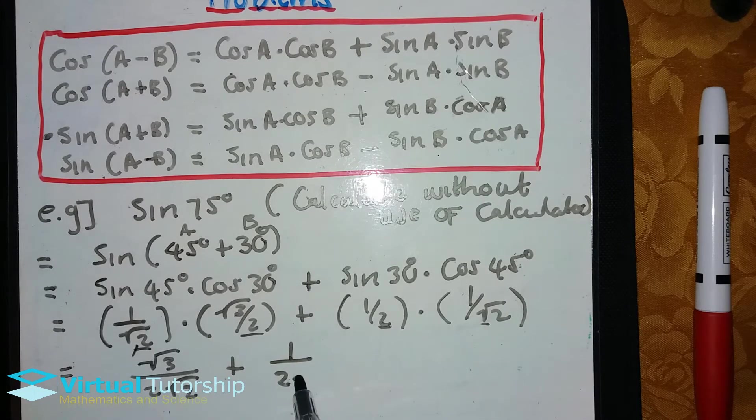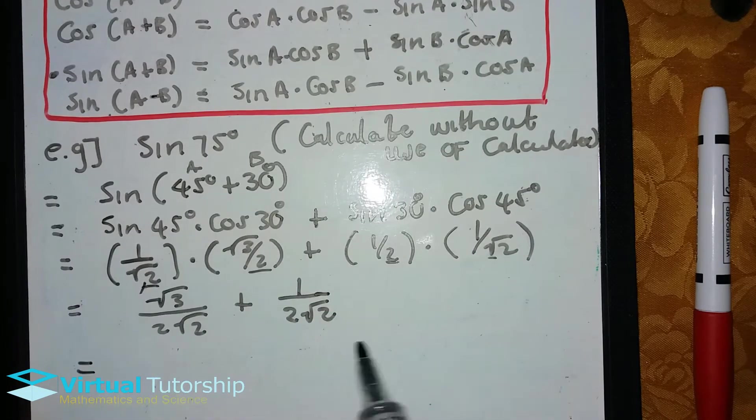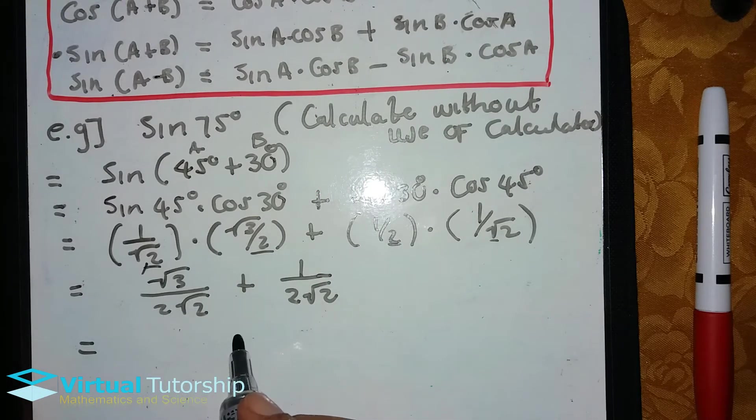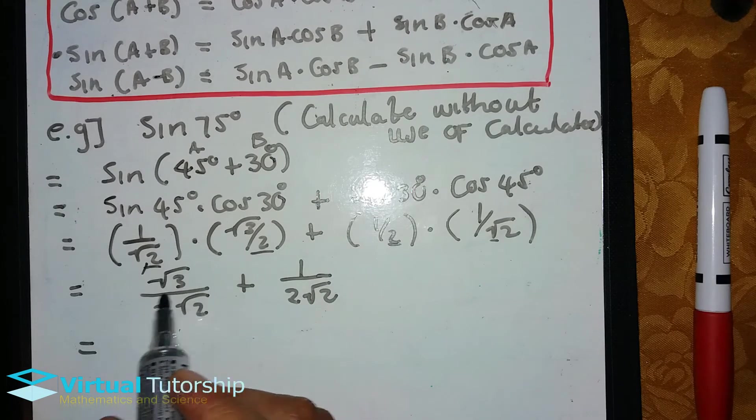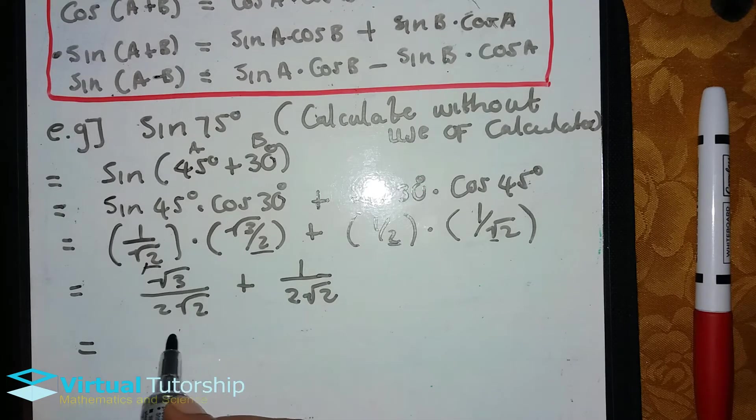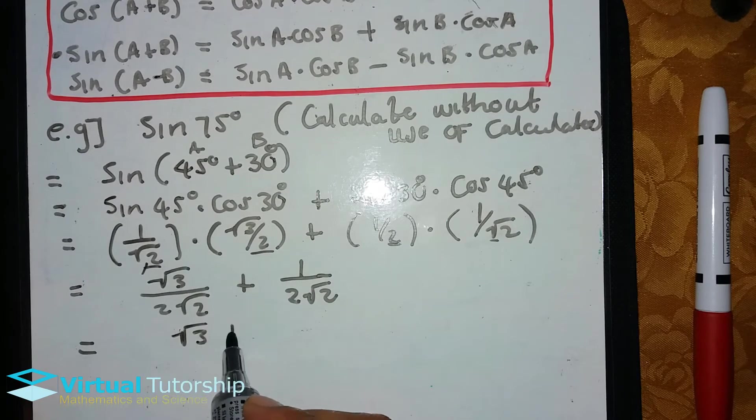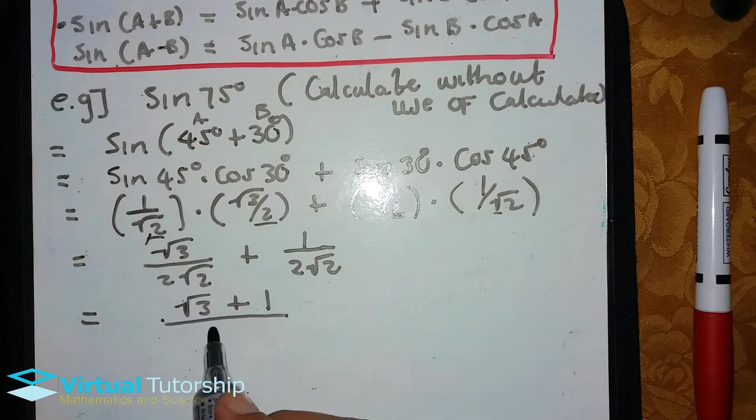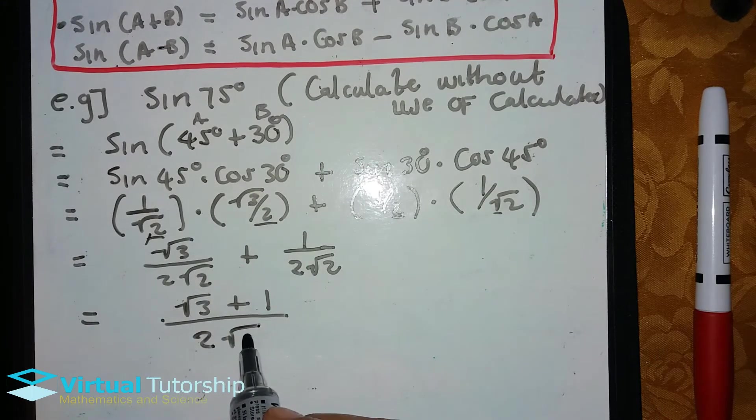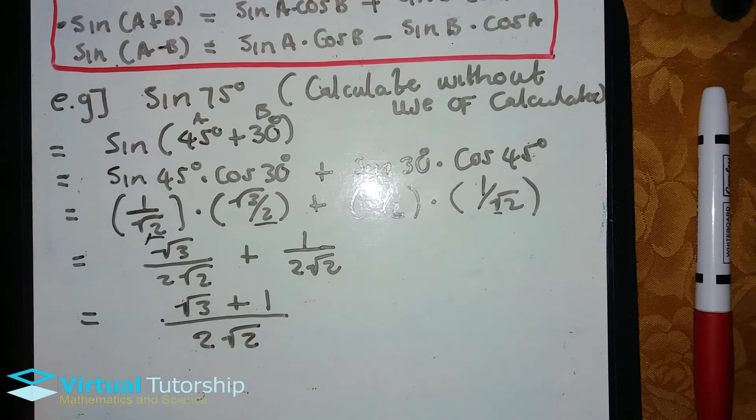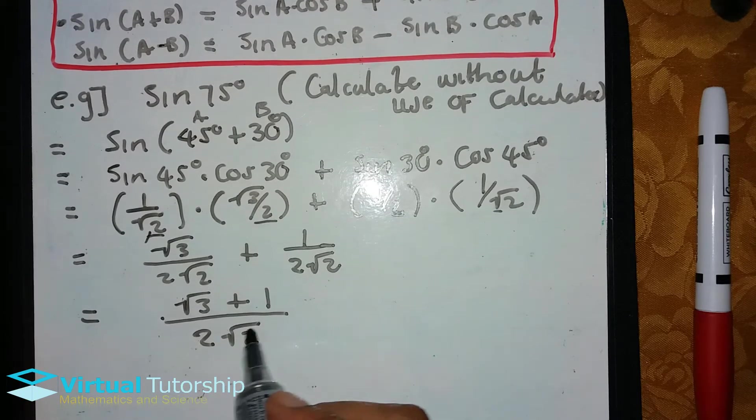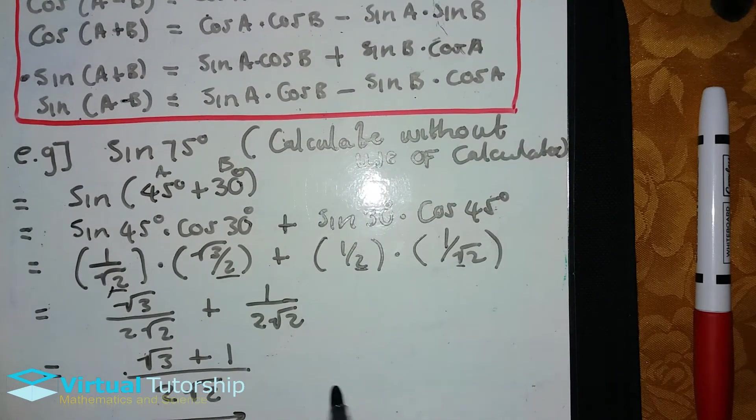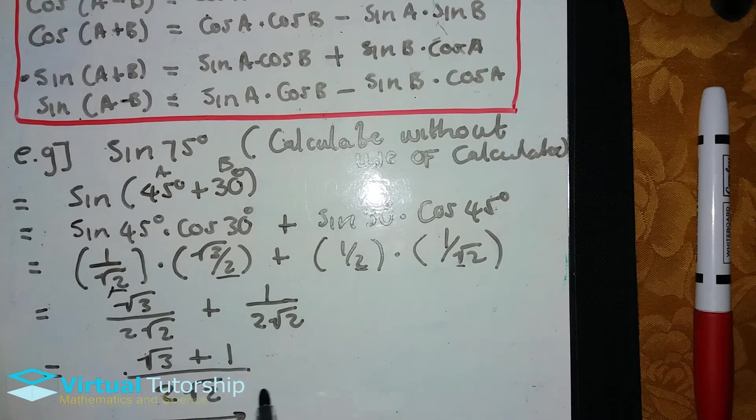Now we're adding these two fractions. We just add the numerator and write down the common denominator. So the answer is this is your final answer. But then in mathematics, we need to simplify further.